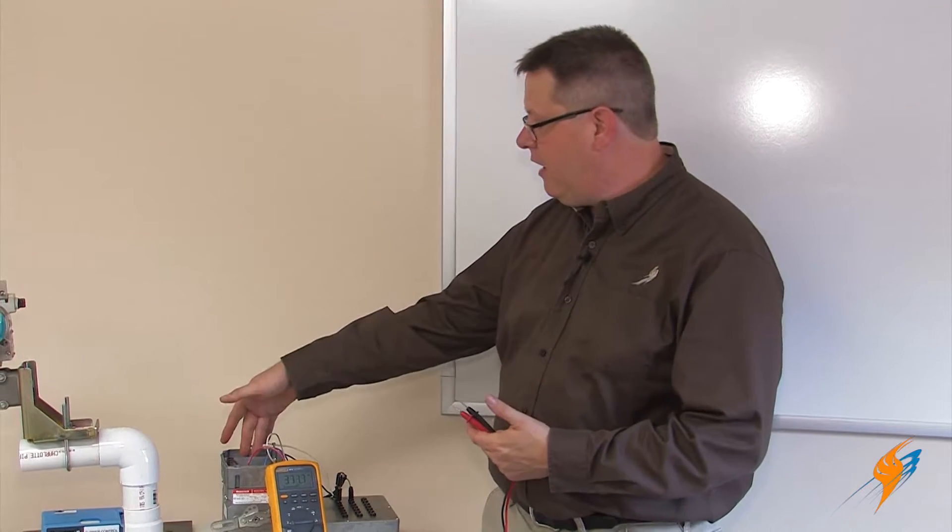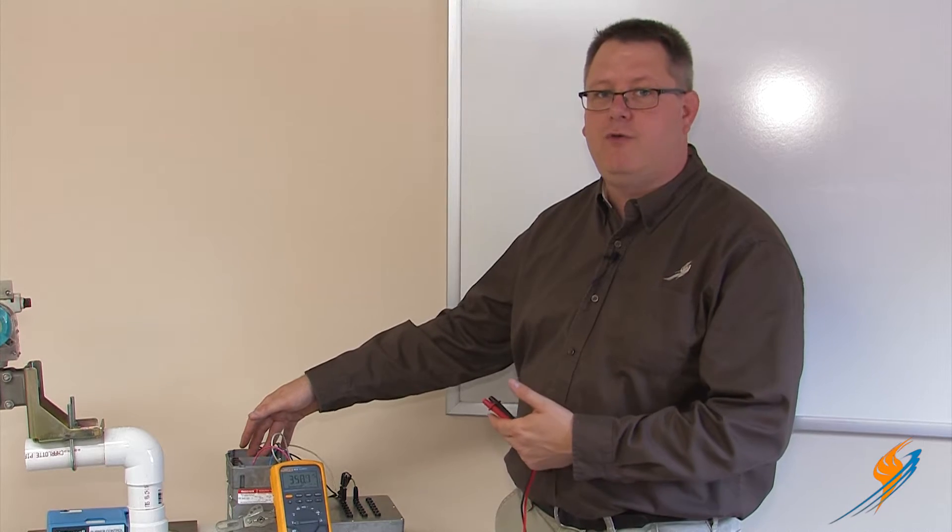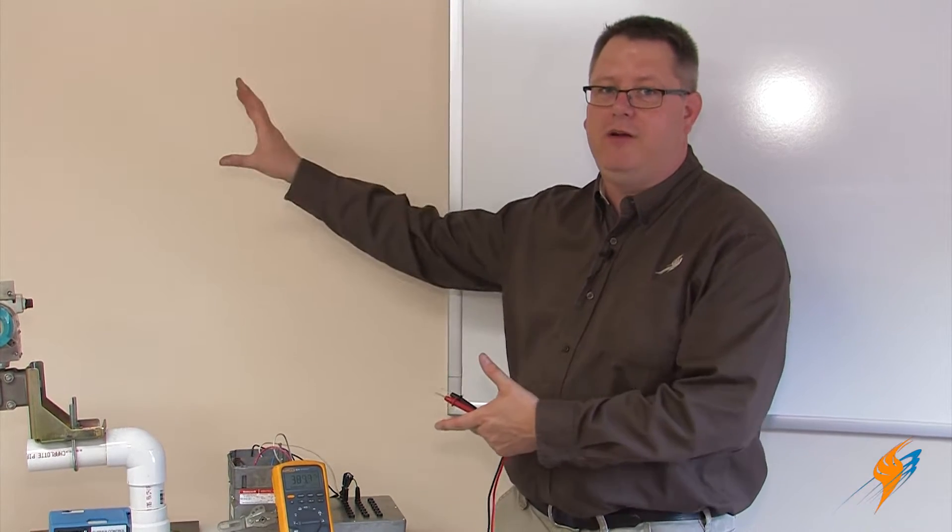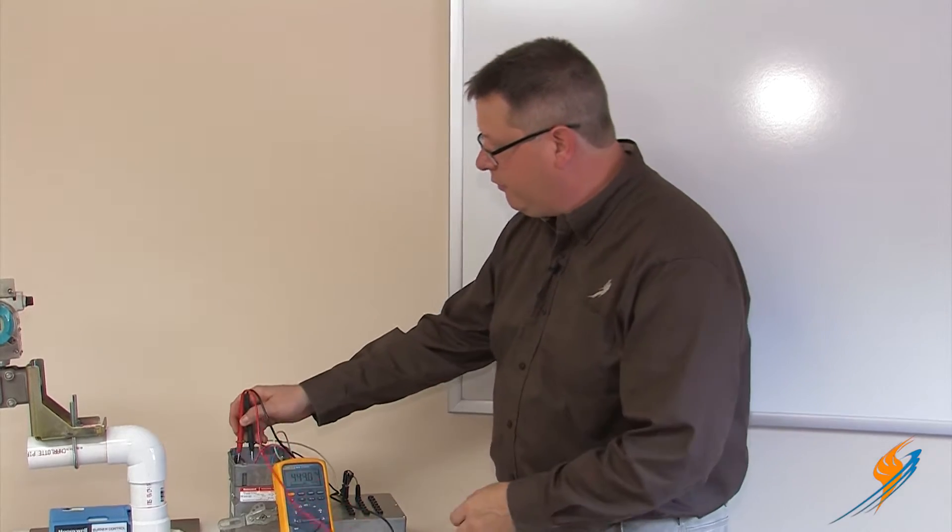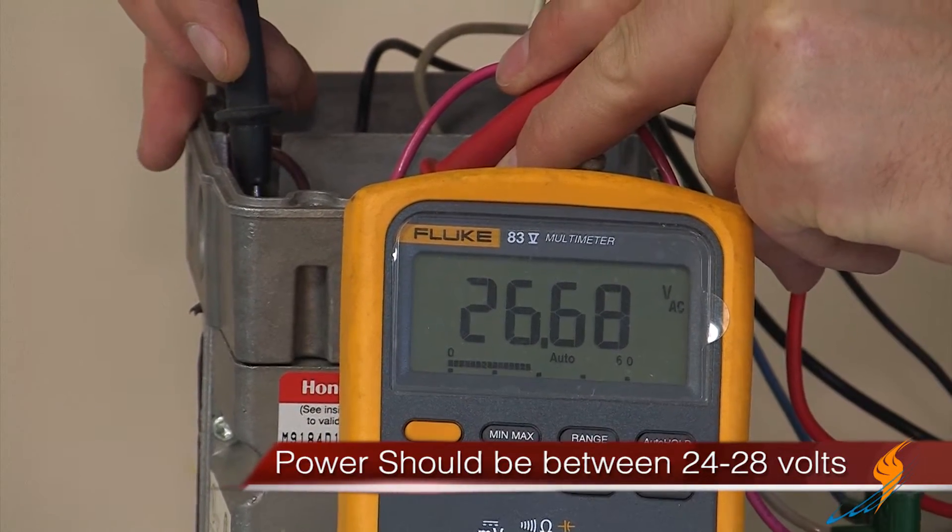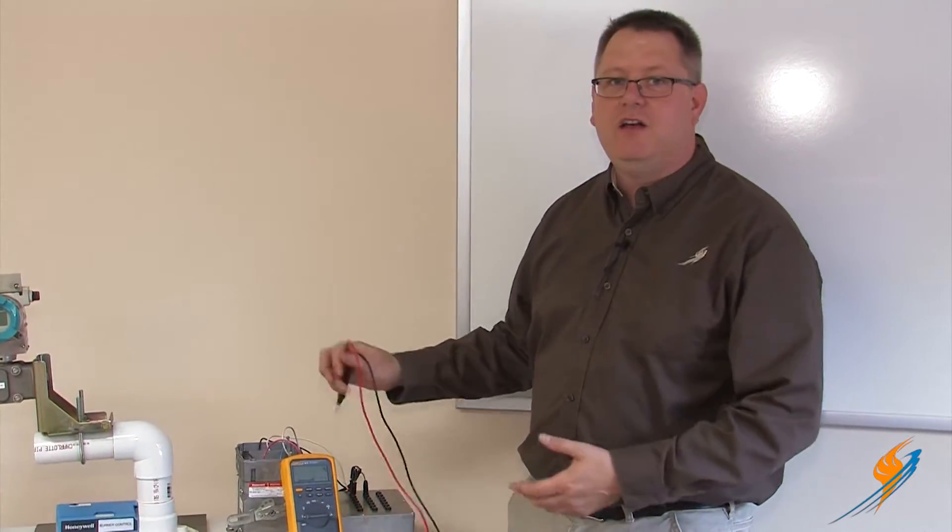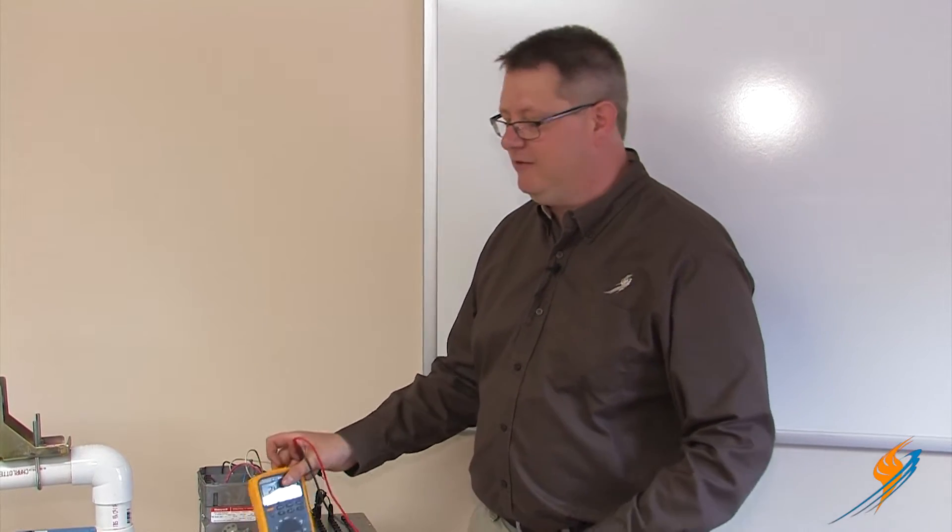That may be from a transformer located inside the mod motor or from a transformer located in a panel with the burner control. But those should read 24 to 28 volts across them and we've got that. So if we've got that voltage, we know that it has the energy it needs to do what we're going to ask it to do next.